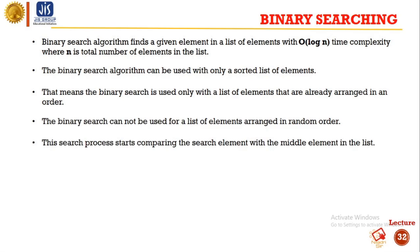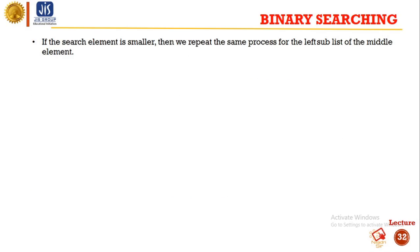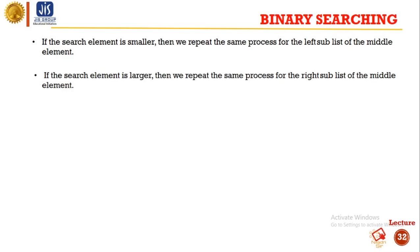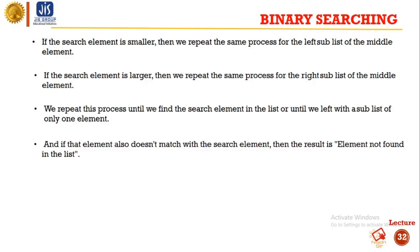This search process starts by comparing the search element with the middle element in the list. If both are matched, then the result is element found. Otherwise, we will check whether the search element is smaller or larger than the middle element. If the search element is smaller, then we repeat the same process for the left sub-list of the middle element. If the search element is larger, then we repeat the same process for the right sub-list of the middle element. We repeat this process until we find the search element or until we are left with a sub-list of only one element. If that element also does not match, then the result is element not found in the list.